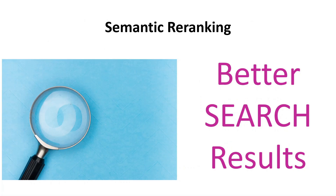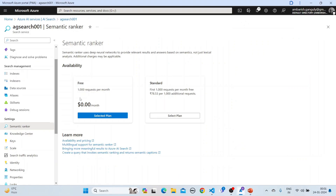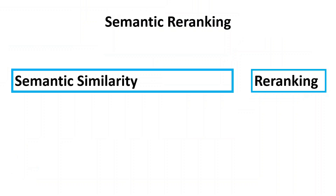This lecture is about semantic re-ranking. We are using semantic re-ranking for better search results. This is used in Azure AI Search — if you click on the semantic re-ranker, you can see Azure AI Search is also using a semantic ranker. We will look into what is beneath it in this session. Semantic re-ranking is composed of two different things: semantic similarity and re-ranking. Let's unpack this with the theory first.